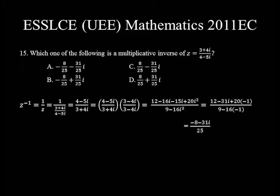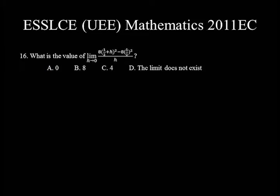Splitting the fraction, we get (−8 − 31i)/25 = −8/25 − (31/25)i. Thus the correct answer is choice A.